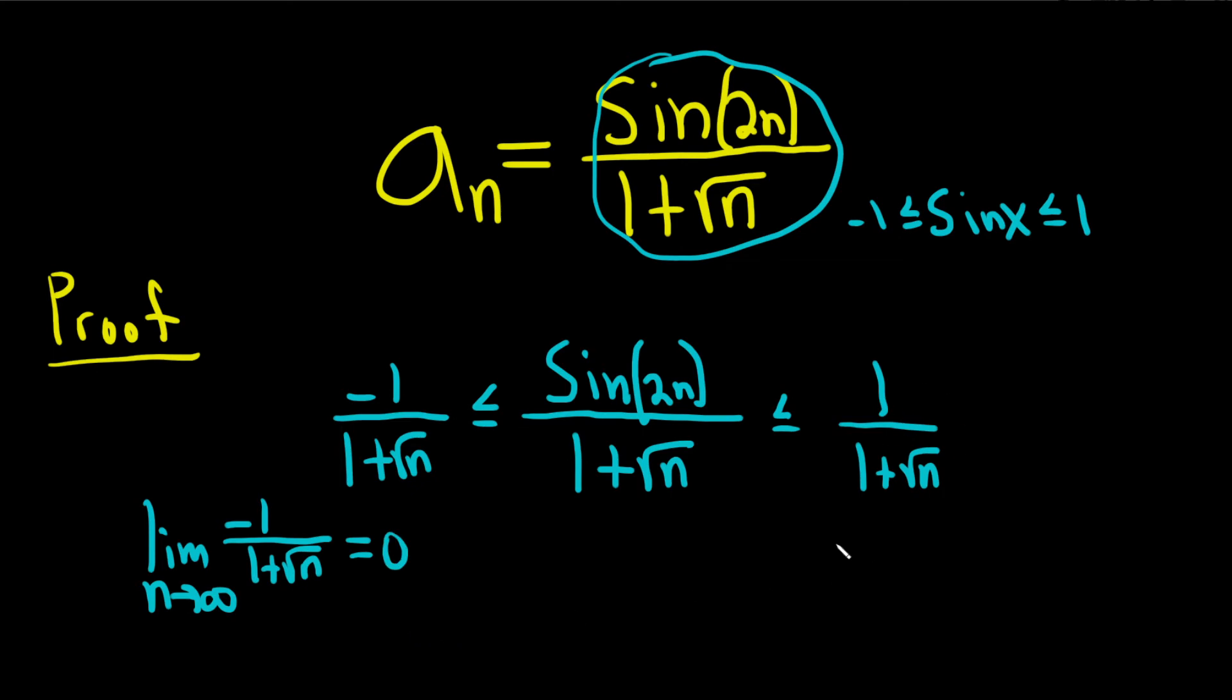Now let's go over here and do this one. We'll take the limit as n approaches infinity of 1 over 1 plus the square root of n. Same thing, as n grows, this fraction gets smaller and smaller, so this also approaches 0.